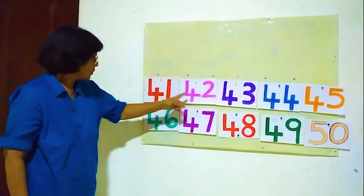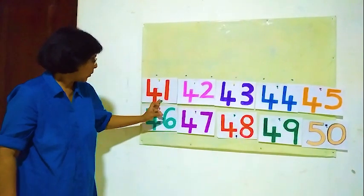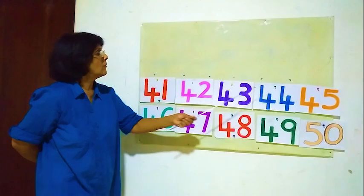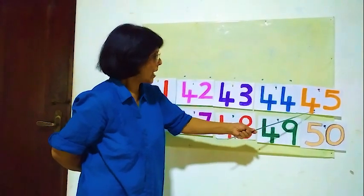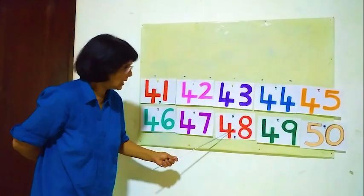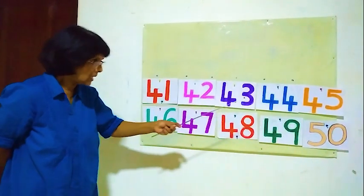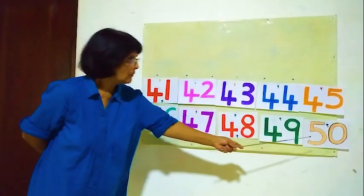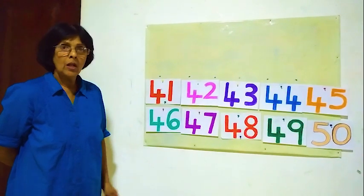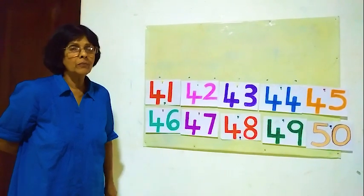Now counting all 10: 1, 2, 3, 4, 5, 6, 7, 8, 9 — 41, 42, 43, 44, 45, 46, 47, 48, 49, 50. Now here 41 to 50 — we put all the numbers in order. All the numbers in order now. We learned 41 to 50, how to put them in order.